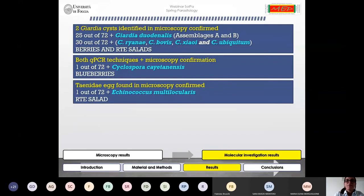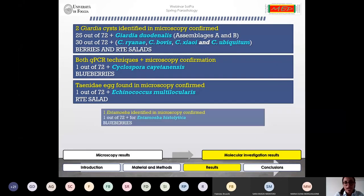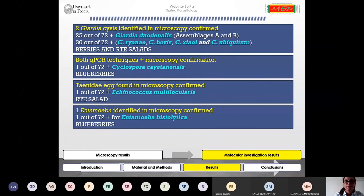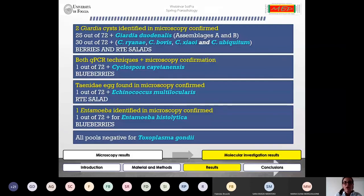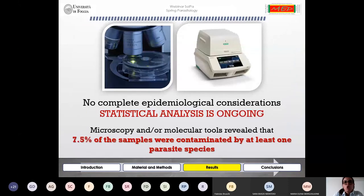The Taeniid egg that we had found microscopically was confirmed in the ready-to-eat salad sample where we found Echinococcus multilocularis. Also, one blueberry sample was found positive for Entamoeba histolytica, confirming once again what we had observed. Finally, all pools tested negative for Toxoplasma gondii.